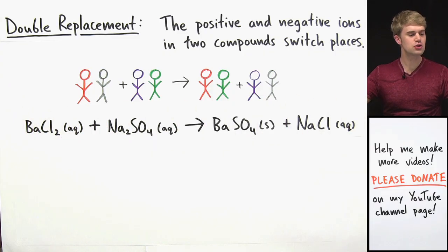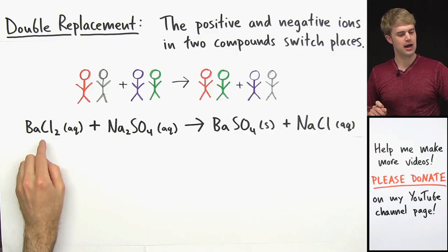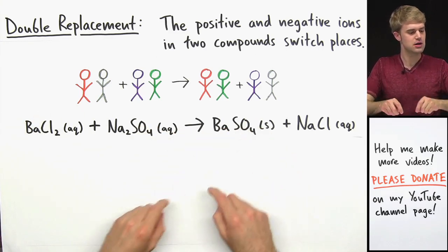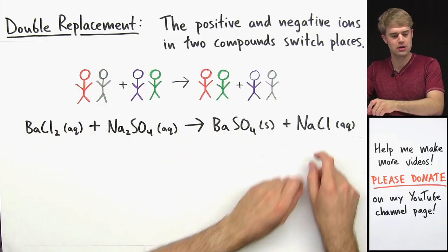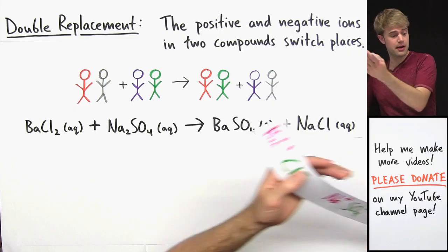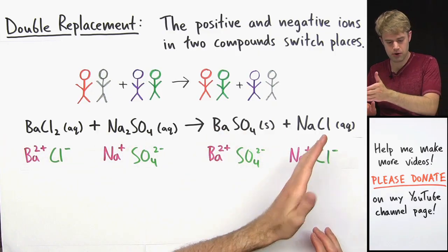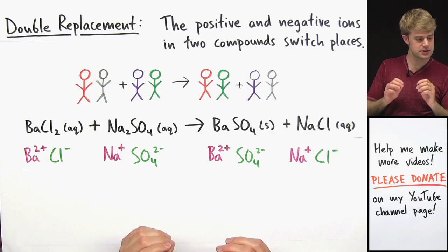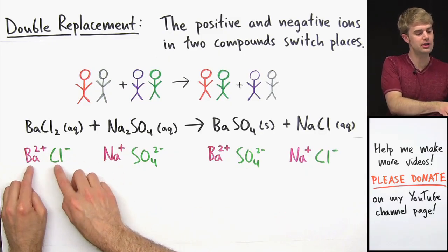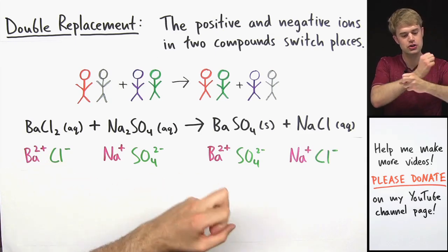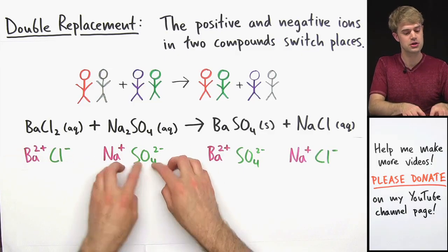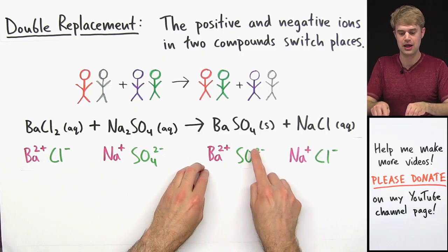Here is a chemical equation that shows a double replacement reaction. We start out with BaCl2 and Na2SO4, and they just switch places. Ba ends up with SO4, and Na ends up with Cl. All of these compounds are ionic, which means we can break them down into the positive and negative ions that make them up. The positive ions are in purple and the negative ions are in green. Ba2+ and Cl− were initially paired up, but Ba finds a new dancing partner — SO4 2− — making BaSO4.